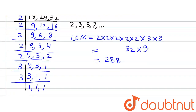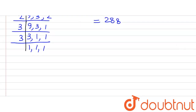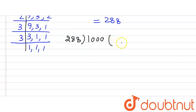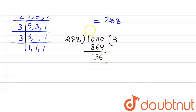Now let's write down the smallest 4-digit number, which is 1000. Dividing 1000 by the LCM 288: 288 × 3 = 864, so 1000 − 864 gives us a remainder of 136. Since the remainder is not 0, that means 1000 is not divisible by 288.